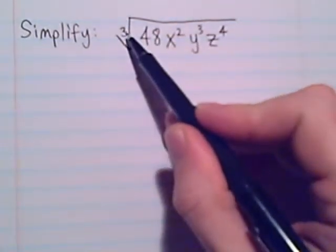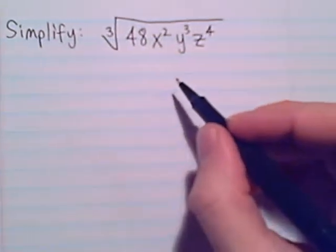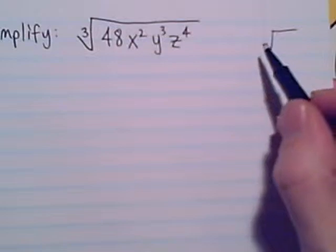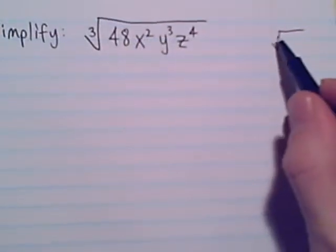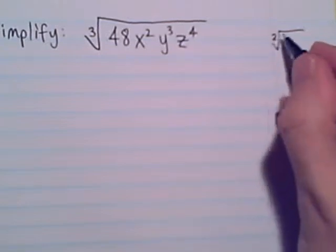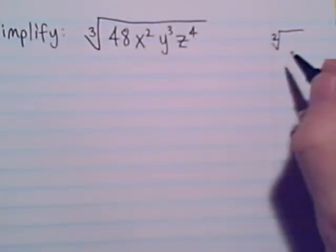This 3, that's the index. It indicates what type of radical we have. So far we have not been using an index. The types of radical symbols we've used with no index, we assume that it's a 2. So what we've been working with so far are radicals where the index is 2.